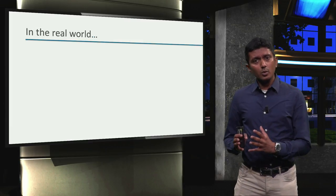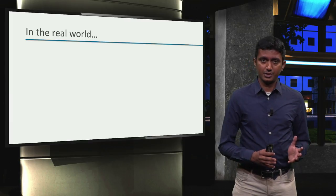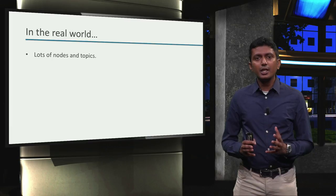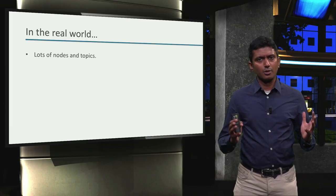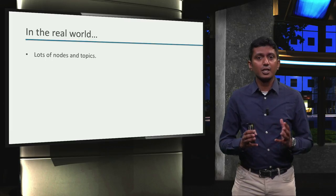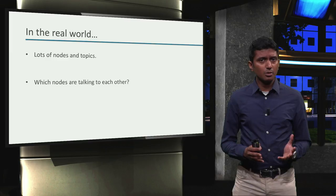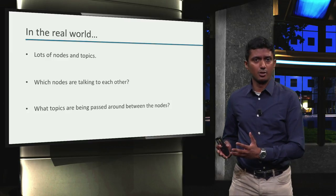Now, in the real world, when we are tasked to work with or design a ROS application, we will have to often deal with lots of ROS nodes and topics. In such a scenario, it is important to first find out which nodes are talking to each other. If so, what topics are being passed around between nodes?